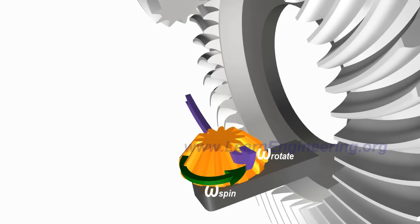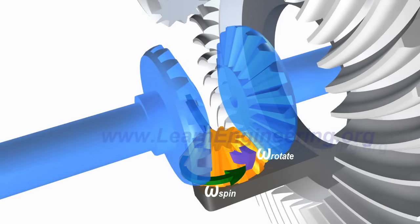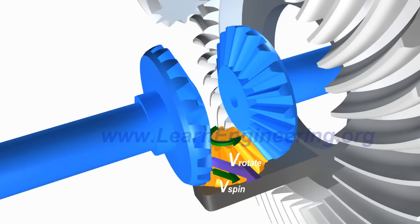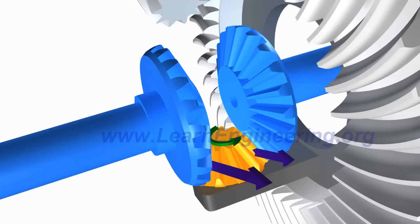The effect of combined rotation on the side gears is interesting. When properly meshed, the side gear has to have the same peripheral velocity as that of the spider gear. When the spider gear is both spinning and rotating, the peripheral velocity at the left side of the spider gear is the sum of spinning and rotational velocity, but at the right side it is the difference of the two. So the left side gear will have higher speed compared to the right side gear.